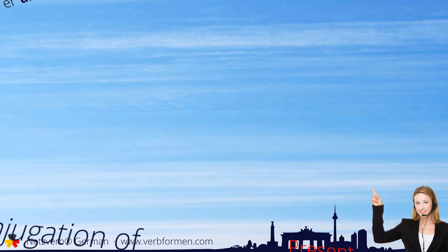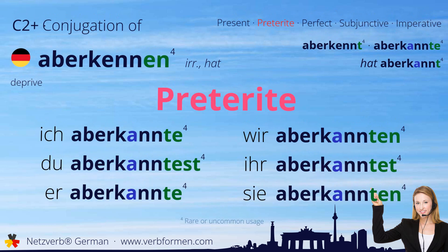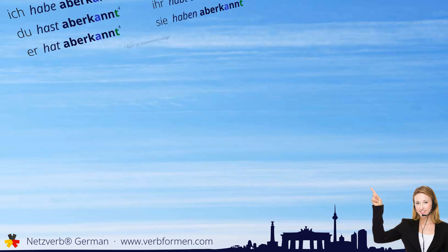Next up is the preterite. Ich aberkannte, du aberkanntest, er aberkannte, wir aberkannten, ihr aberkanntet, sie aberkannten.